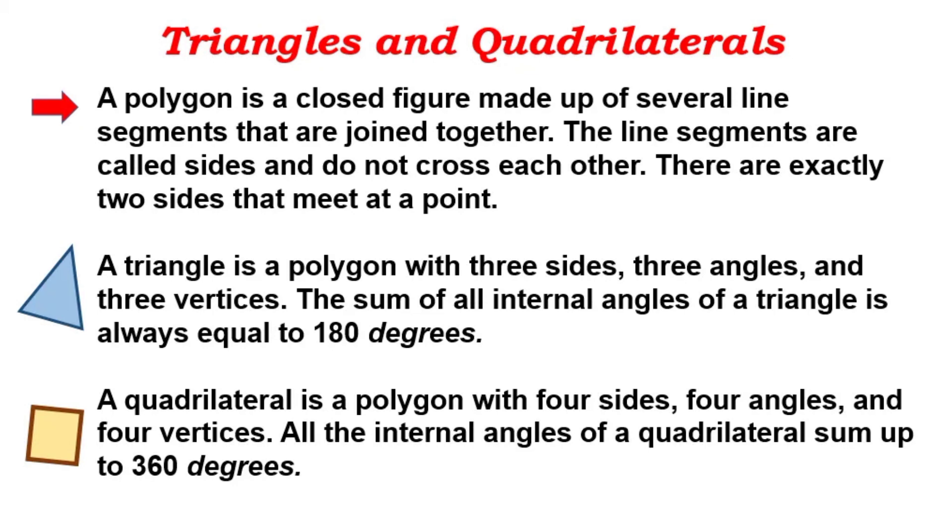A quadrilateral is a polygon with four sides, four angles, and four vertices. All the internal angles of a quadrilateral sum up to 360 degrees.